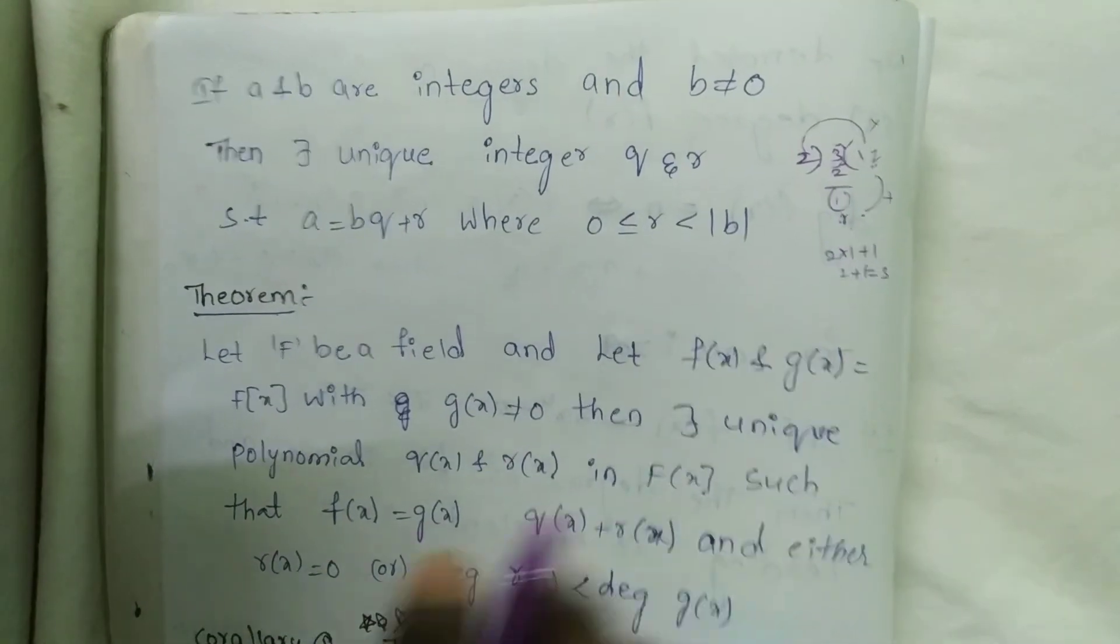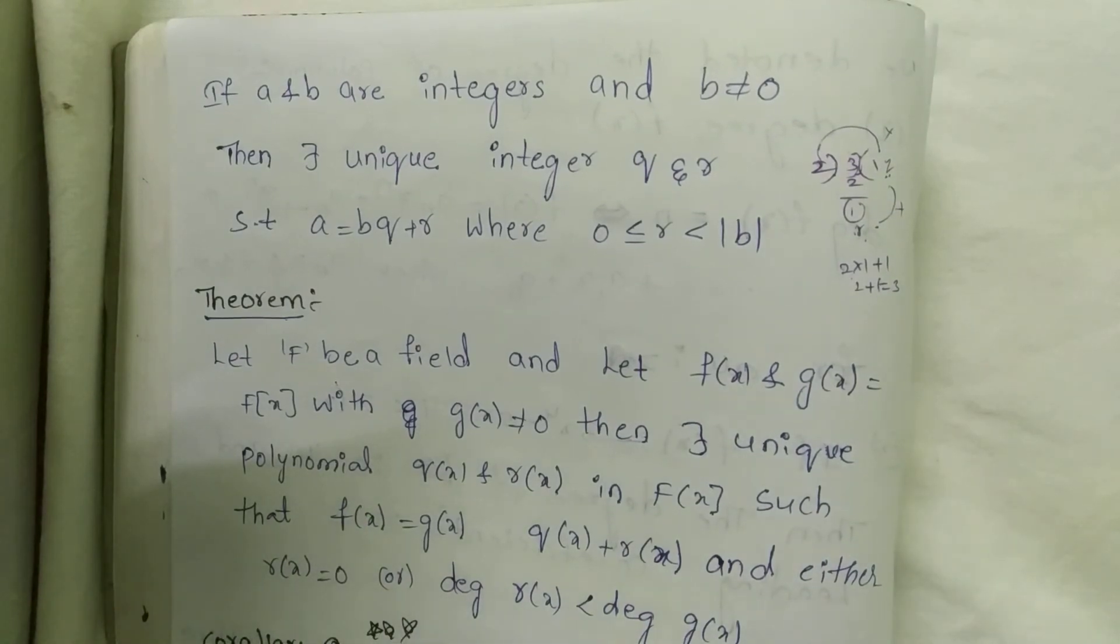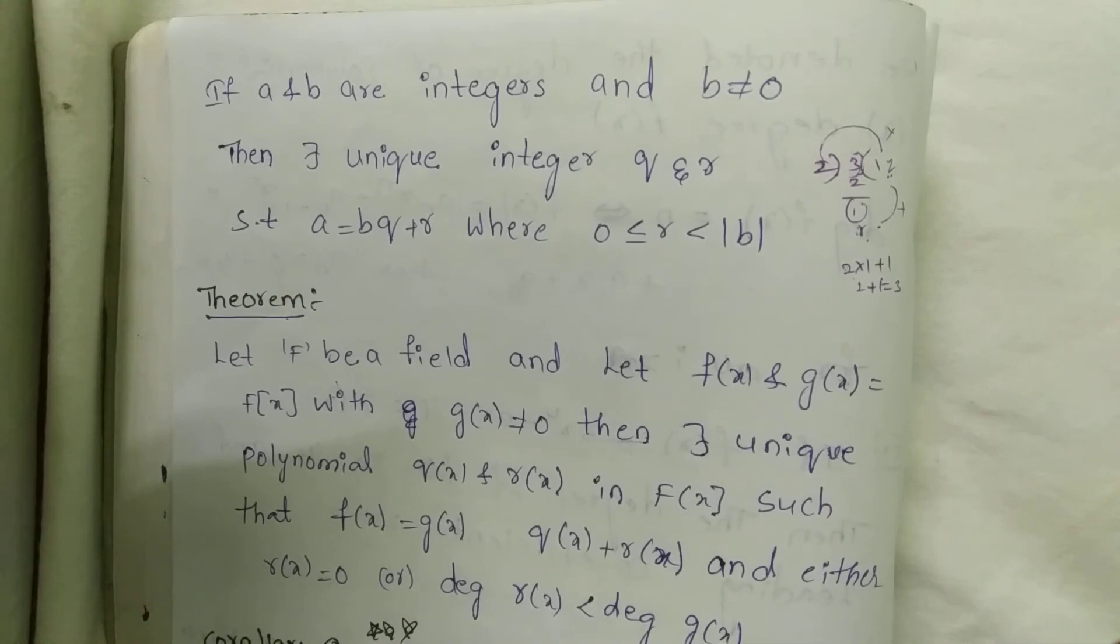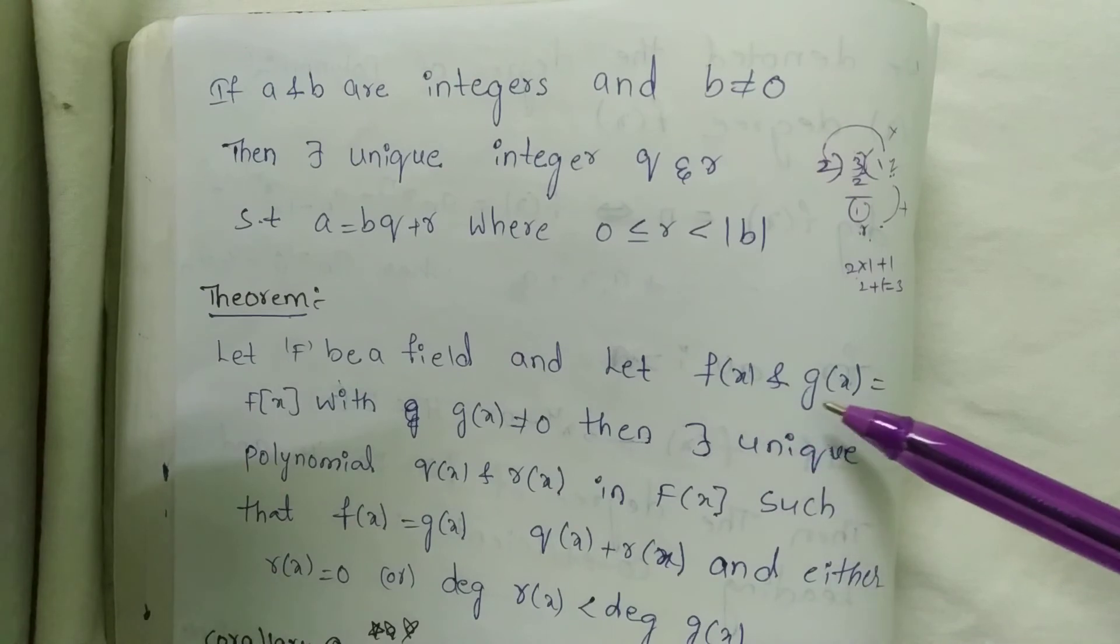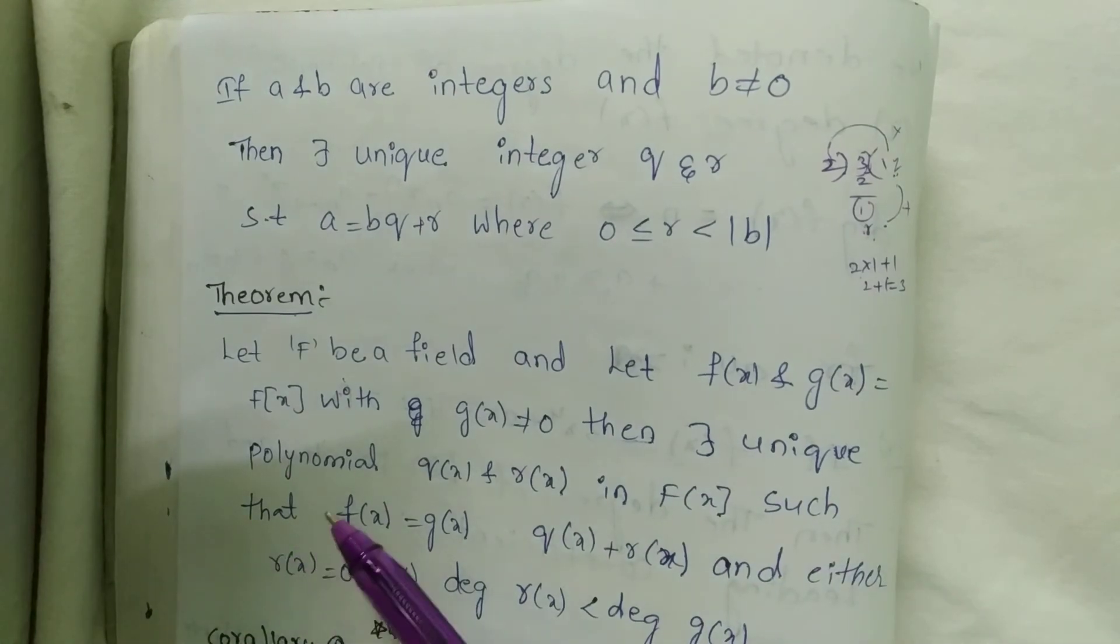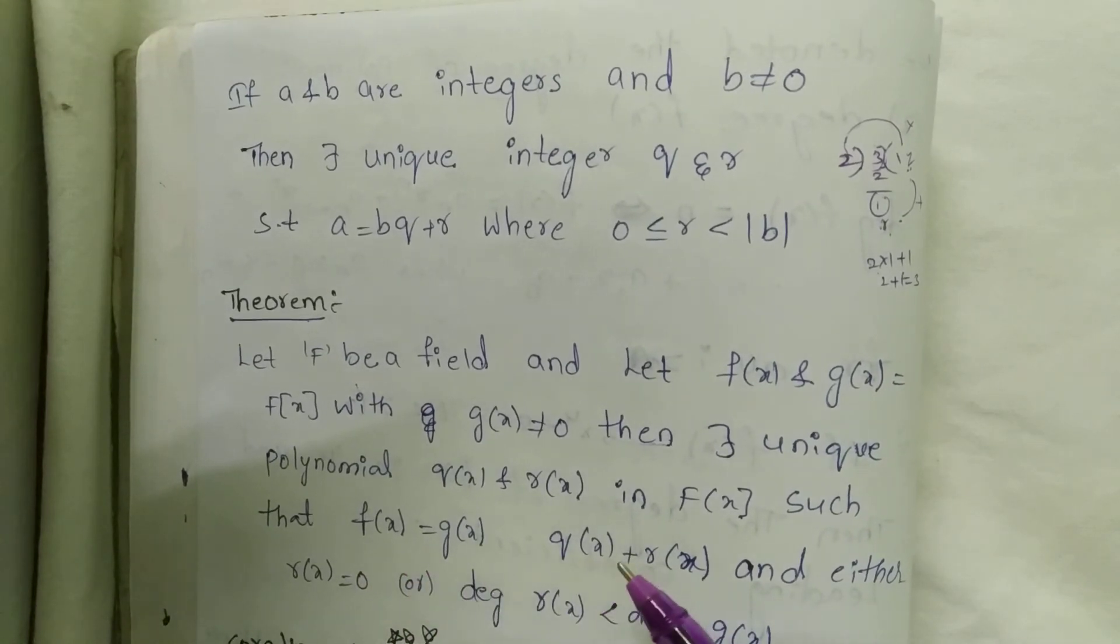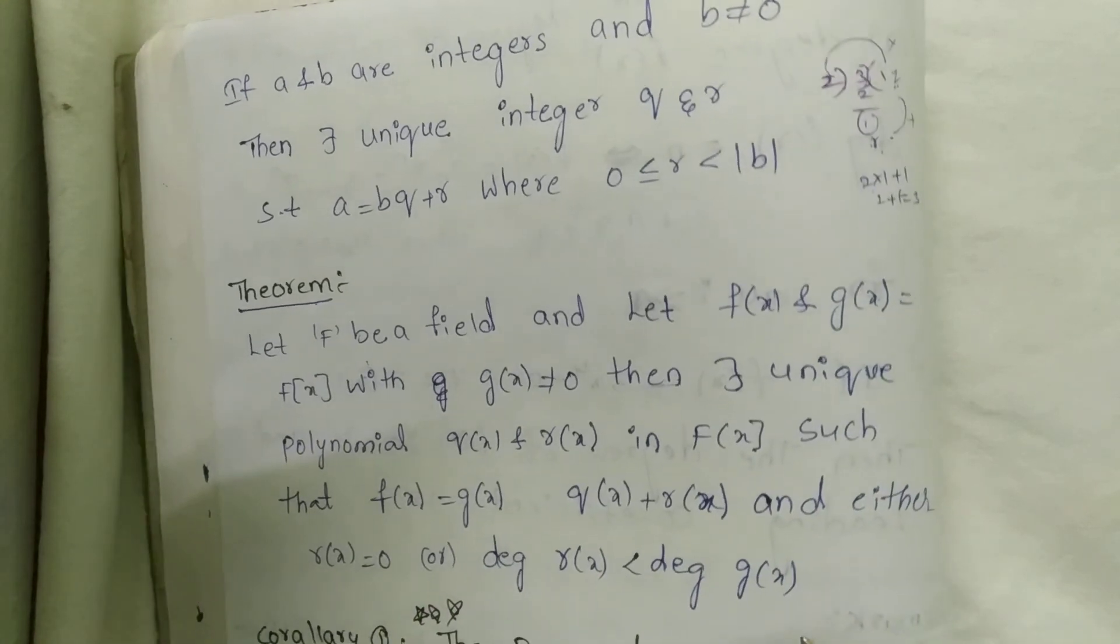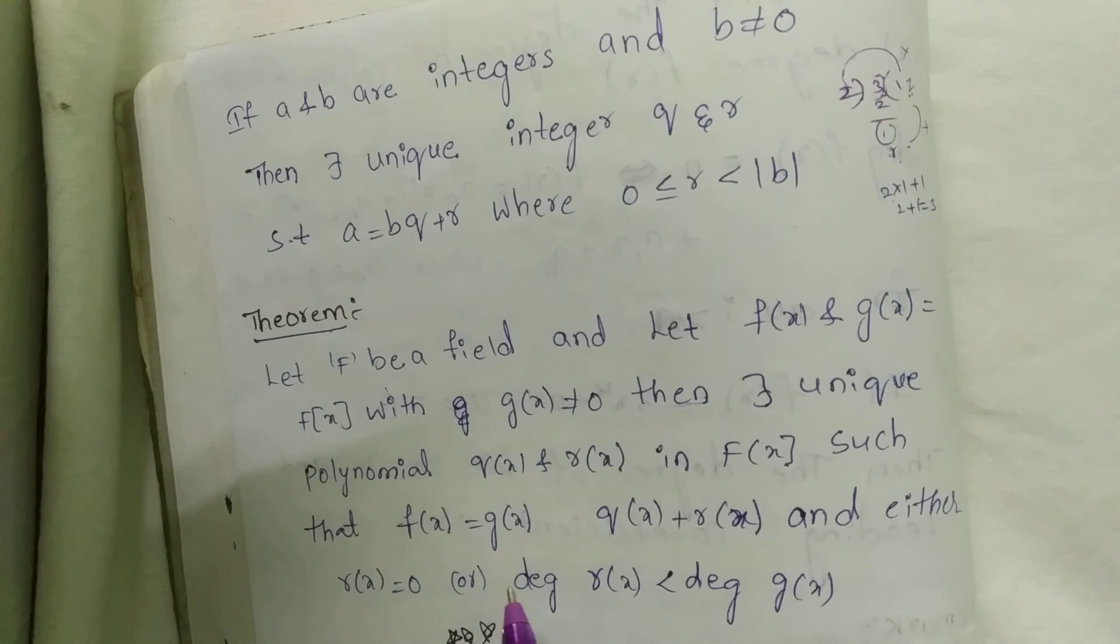Theorem: Let F be a field and let f(x) and g(x) ∈ F[x] with g(x) ≠ 0. Then there exist unique polynomials q(x) and r(x) in F[x] such that f(x) = g(x)q(x) + r(x), and either r(x) = 0 or deg(r(x)) < deg(g(x)).